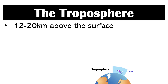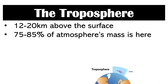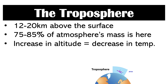The troposphere is 12 to 20 kilometers above the surface, and 75 to 85% of the atmosphere's mass is here — meaning 75 to 85% of the nitrogen, oxygen, and other gases are in the troposphere. The way temperature behaves in the troposphere is that as you go higher, temperature decreases. Increasing altitude means decreasing temperature, as long as you are in the troposphere.